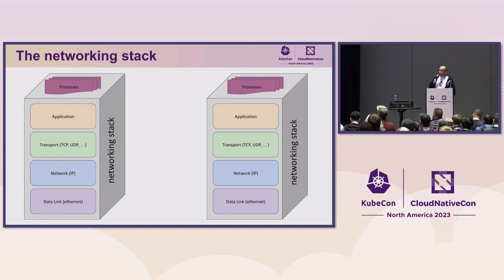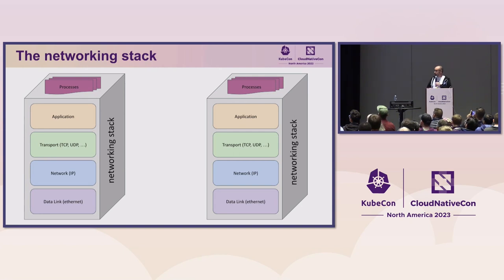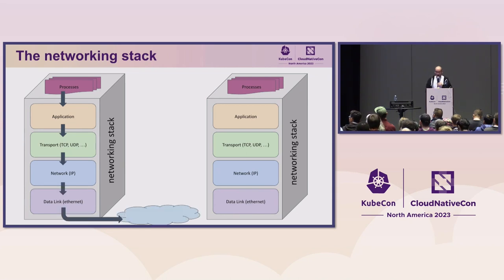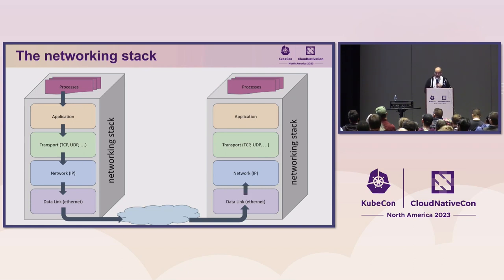Before going into the load balancer topic, let's make a first stop at what the networking stack is and how an application works. You can see in this diagram two hosts. The hosts have processes that want to communicate with each other. They open a socket, the packet goes through the application layer, then assembles into a TCP packet, then an IP packet, and it travels through the network. Magically, this packet appears in the networking stack of the second host and does the reverse path up to the other process.